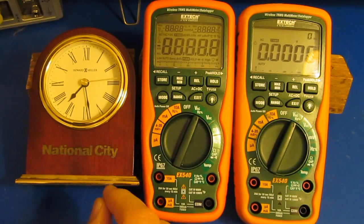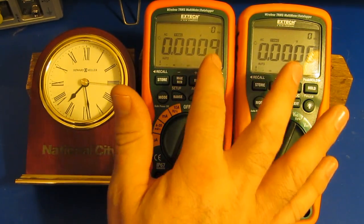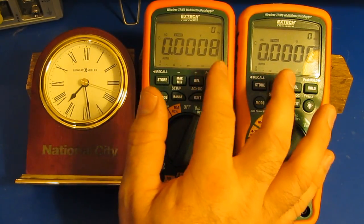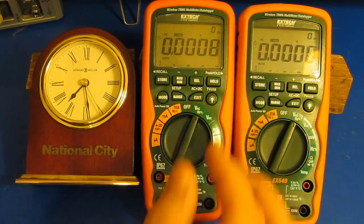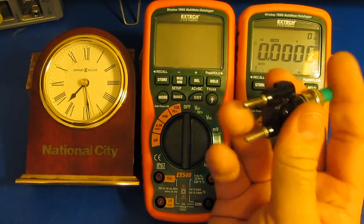This meter on the other hand, you can see it will read about one millivolt. And so it's .82, I've seen it as high as about 1.1 millivolt. That really has nothing to do with the input leads.